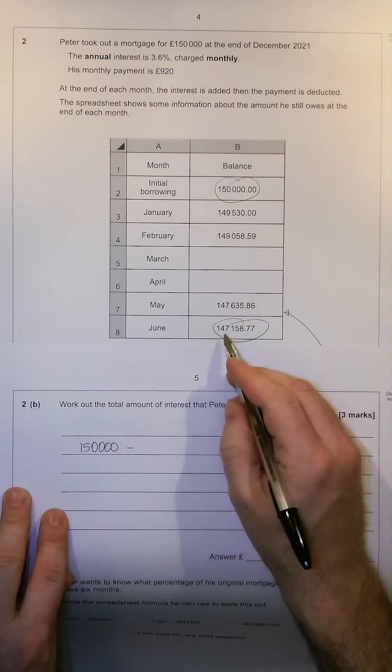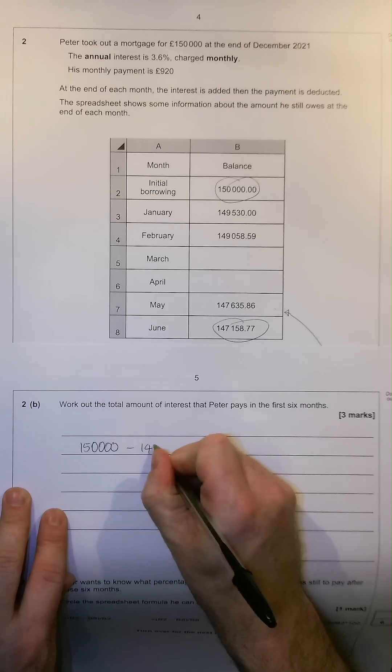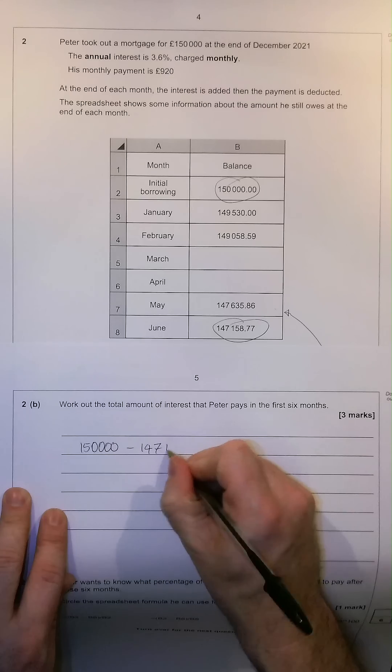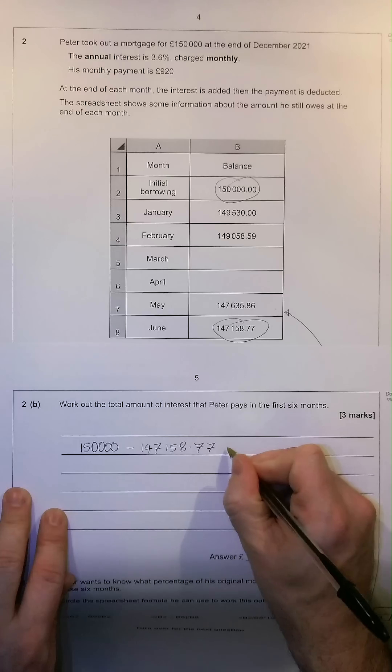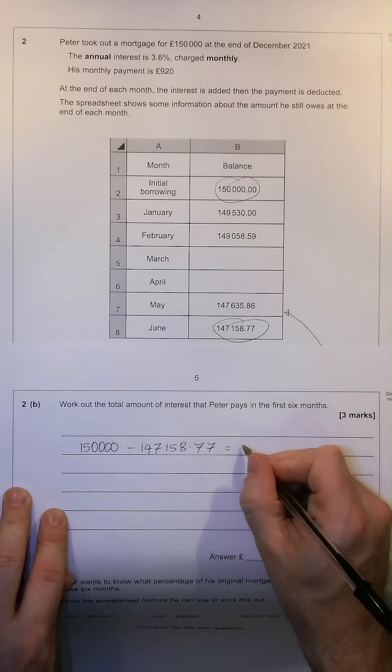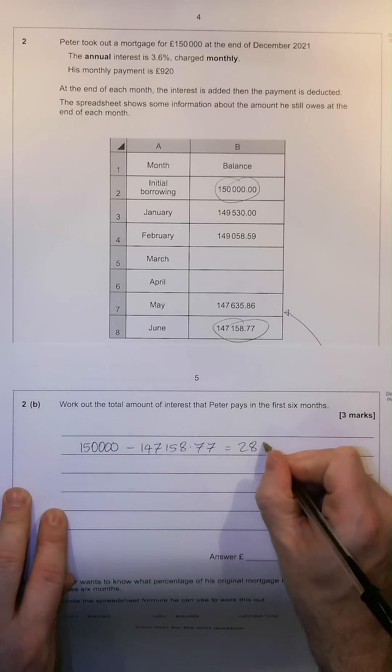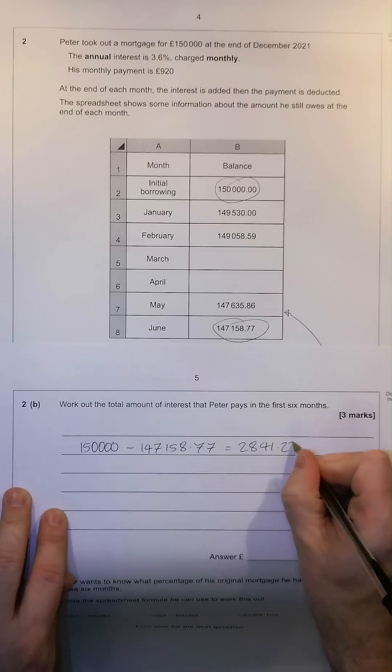Then, we're going to take away the amount he still owes after six months, £147,158.77. And that will give us a number of £2,841.23.